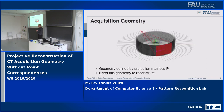So, what is acquisition geometry? For CT reconstruction, we need raw data which we measure, but we also need calibration data on the geometry of our CT system. That calibration data specifies how our operator, which we need to invert, is actually built up. This geometry is usually described by projection matrices and specifies how the source and detector move.